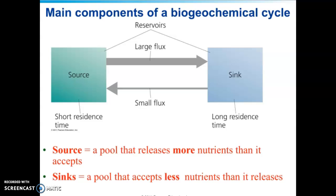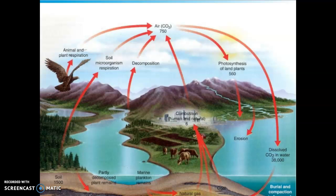A source is any process through which a greenhouse gas is released into the atmosphere. Both natural processes and human activities release greenhouse gases. A sink is a reservoir — another term for it — that takes up a chemical element or compound from another part of its natural cycle. In this diagram, we're going to be looking for processes that would release carbon dioxide or carbon.